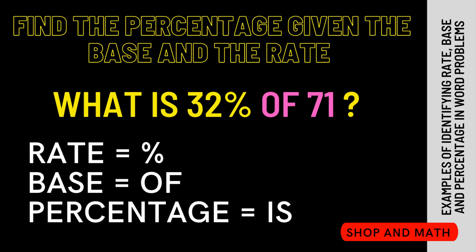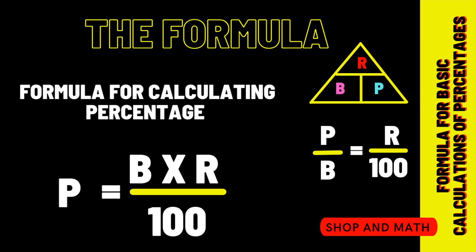Of 71. The of is associated with base, so therefore the base is 71. Now that we have our rate and our base, now we can calculate the percentage.